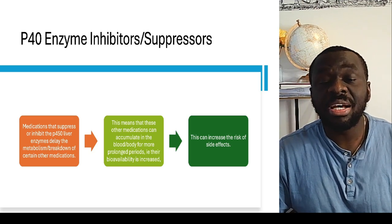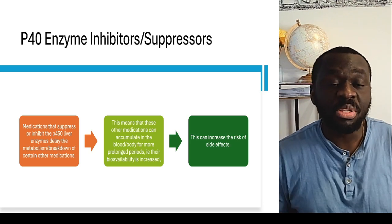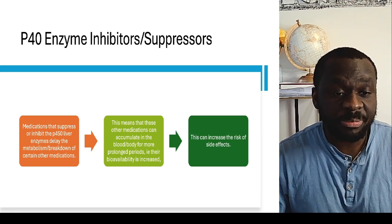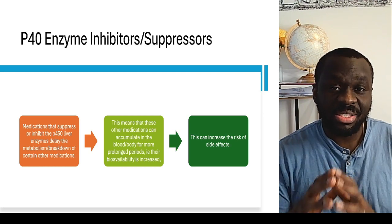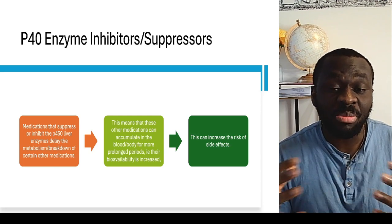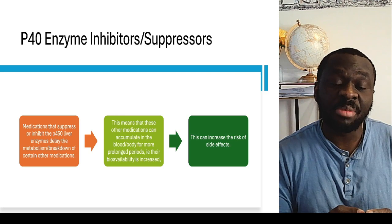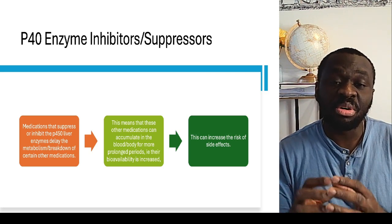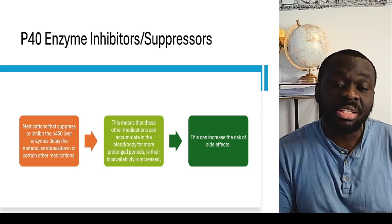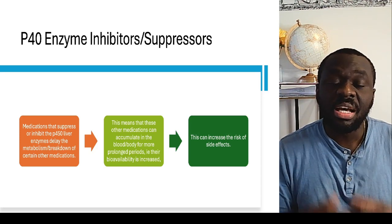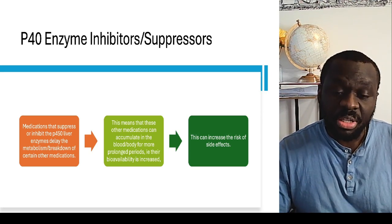Now let's look at the P450 enzyme inhibitors or suppressors — those that reduce the activity of the P450 enzymes in the liver. When you suppress the P450 enzymes that are supposed to metabolize or break down medications, you will then have an excess amount of the other medication in the blood or body, not being broken down, staying in the body for longer durations, having longer effects. And obviously that can then lead to side effects.